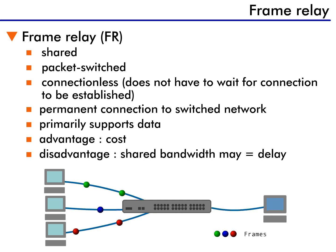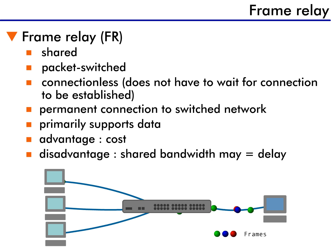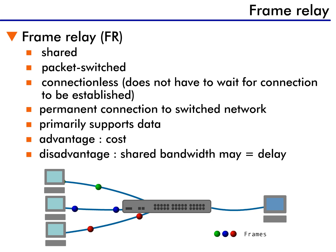As we discussed in an earlier lesson, packet-switched networks share bandwidth across a service provider's switched network. All traffic is packetized and addressed, just as it is on an Ethernet network, and inserted into the flow of traffic. Frame Relay is connectionless, so data can just be sent when it's ready and does not have to wait for a connection to be established. The connection is considered permanent because the corporate customer has a permanent connection into the switched network.